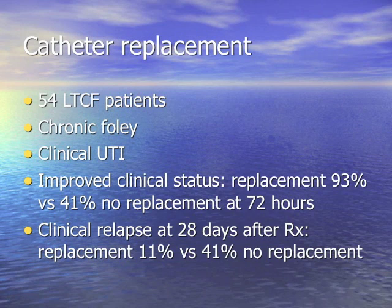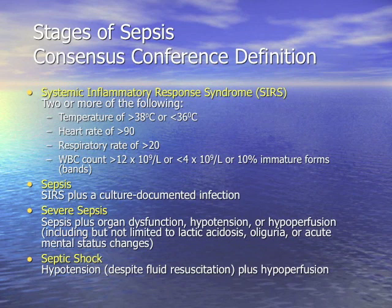Regarding catheter replacement in 54 long-term care facility patients with chronic Foleys: improved clinical status occurred in 93% with replacement versus 41% without at 72 hours. Relapse was 11% with replacement versus 41% without. You don't routinely change a Foley catheter per the literature — only if it's malfunctioning. However, if there's a Foley and a UTI, change the Foley catheter.